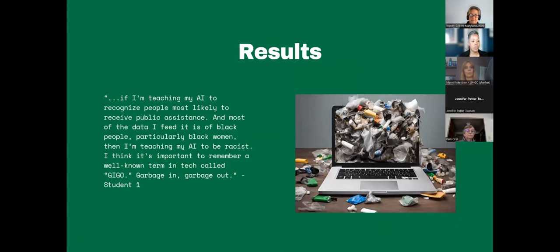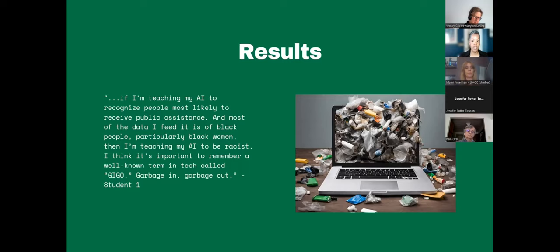Now I want to share some actual excerpts of the student posts. This is from a male student who identified as a person of color and is a cybersecurity major. He says, 'If I'm teaching my AI to recognize people most likely to receive public assistance, and most of the data I feed it is of Black people — particularly Black women — then I'm teaching my AI to be racist. I think it's important to remember a well-known term in tech called GIGO: garbage in, garbage out.' I had never heard of the term GIGO before, hence the title of this presentation. We can also glean from this student's post that he has a fair degree of AI literacy, which is not surprising because he's a cybersecurity major.